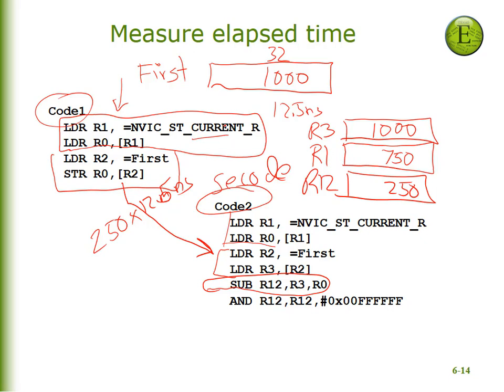The only complicated part is that these were 24-bit measurements stored in a 32-bit register, and therefore the top eight bits don't make any sense. So after I do the subtraction, I will AND it off.